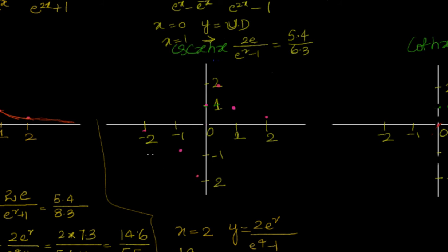Drawing the graph of csch(x): as x goes to negative values approaching 0, y goes to very large positive values; but x equal to 0 is undefined. Similarly, coming from positive values towards 0, y increases to positive infinity. And as x moves away from 0 in either direction, y approaches 0.